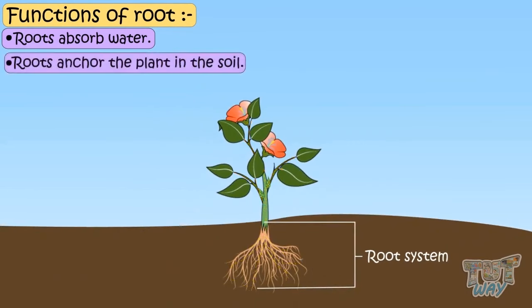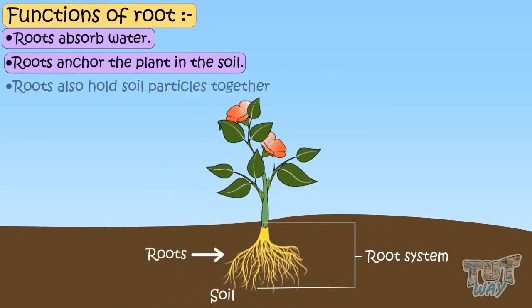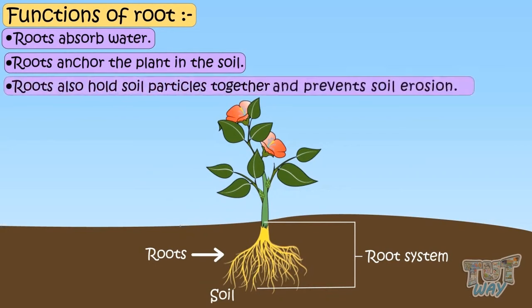Roots anchor the plant — that is, roots fix the plants into the soil. Roots also hold soil particles together, which prevents the soil from being washed away with rain or storm. So roots are the support system of the plant.